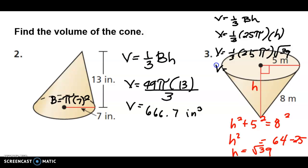So we have 25 times 3.14, and then we multiply it by the radical of 39, and then we divide the answer by 3. So there you find my answer. I got 163.42 cubic meters. So that's the volume of that cone.